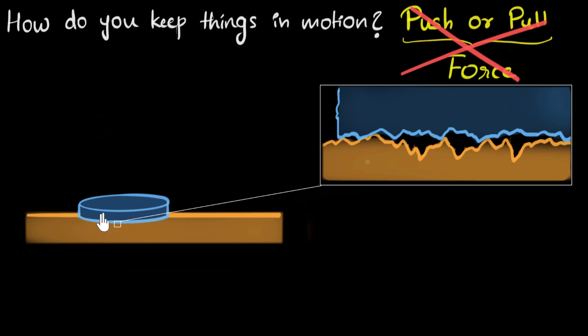But as this striker moves on the board, notice because of the unevenness, it causes obstruction. And it is this obstruction which we call friction.